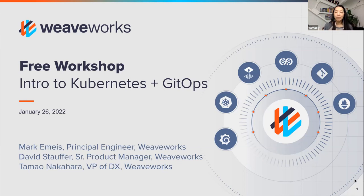We bracket two hours, and even with all the troubleshooting, we're usually done in about 90 minutes. So hopefully you will leave this workshop having understood some core concepts around Kubernetes and what it is, and why GitOps and Kubernetes are very closely intertwined and how GitOps is one very natural evolution of Kubernetes. We'll also show you how we will help you solve your problems.